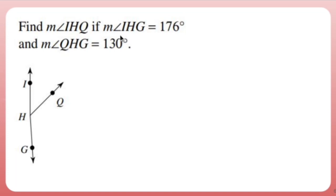This is going to use what's called the angle addition postulate. The angle addition postulate says if I have two angles like this one right here and this one right here glued together, I can add them up and equal that whole thing right there.